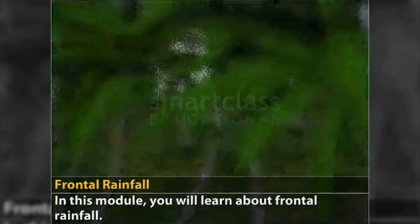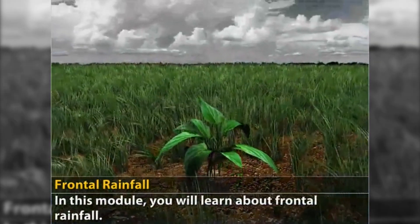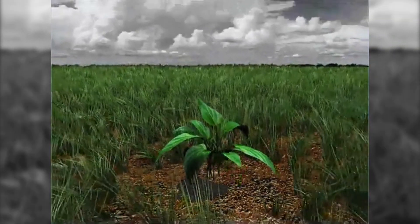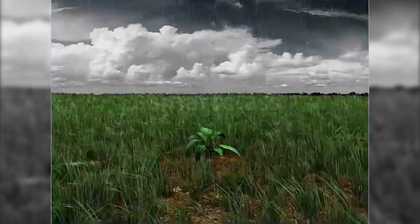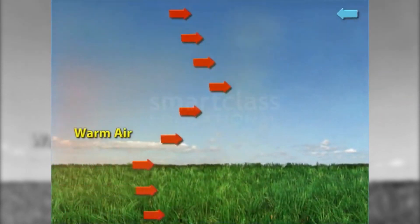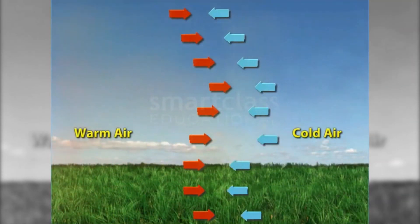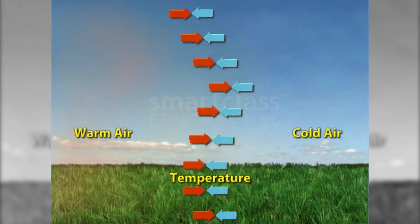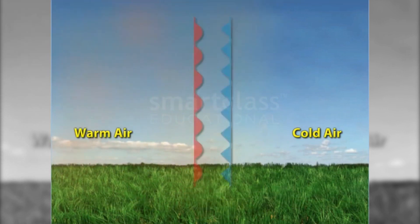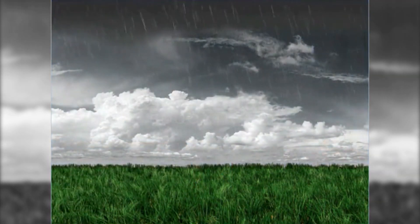Frontal rainfall. In this module you will learn about frontal rainfall. Frontal rainfall occurs over areas where a warm air mass meets a cold air mass. Both air masses have different temperatures, densities, and moisture content, and are separated by a zone called a front. The front is where rainfall occurs, and the occurrence is termed frontal rainfall.